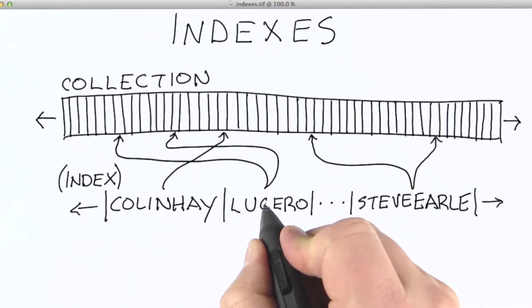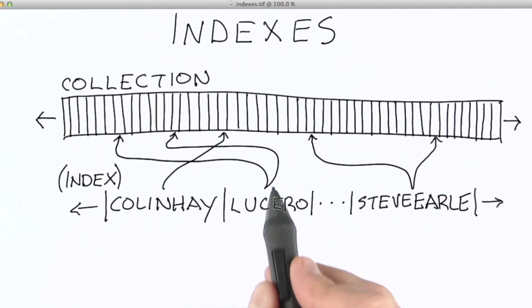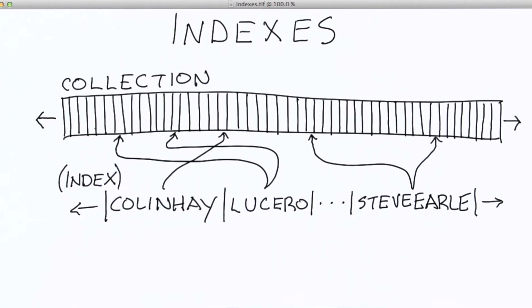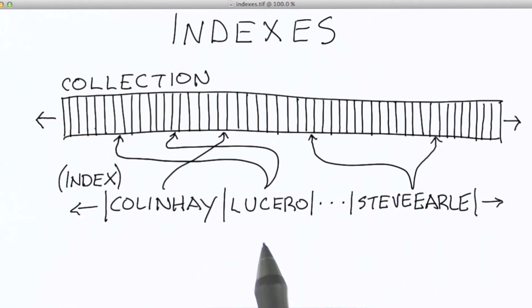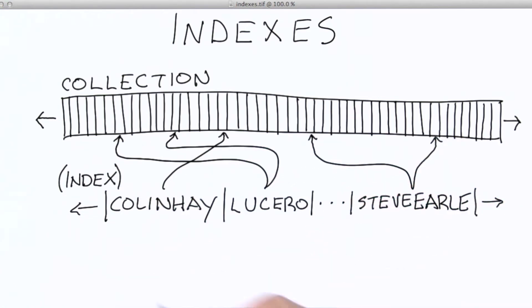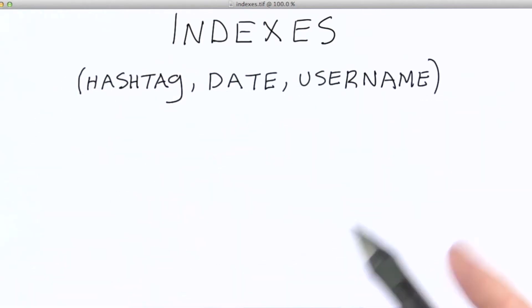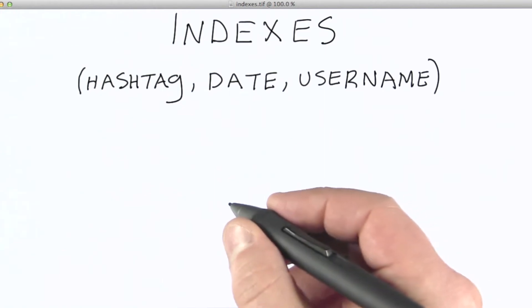And if I'm looking for, let's say, Lucero, I can quickly search, find the item, and then have a pointer to the actual document or documents inside the collection that have this hashtag associated with them. So this picture actually represents an index that is composed of just hashtags. So we're using a single field as the basis for our index. But this is just a special case of the more general idea of indexes in MongoDB.